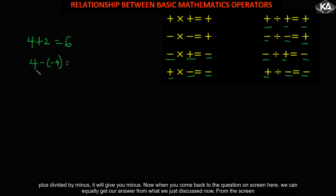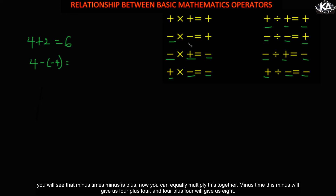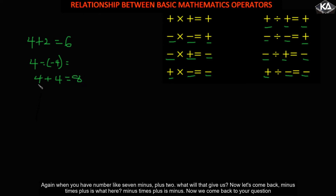Now coming back to the question on screen, we can get our answer from what we just discussed. From the screen you see that minus times minus is plus. So you multiply the signs together — minus times minus gives plus — so you have four plus four, and four plus four gives us eight.